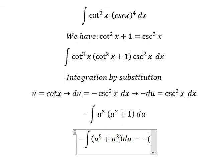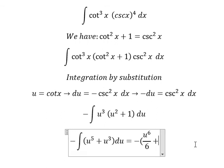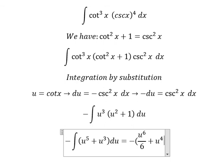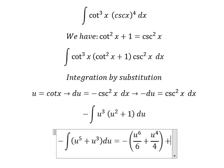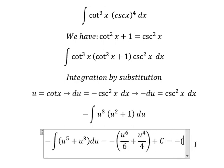And now we have the final answer. The integral of u⁵ gives us u⁶ over 6 plus u⁴ over 4 plus c. Substituting back for u equals cot x.